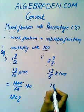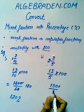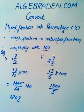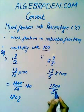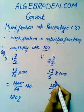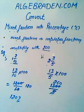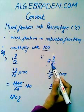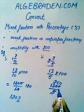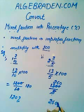It gives us 1300 over 5. Now divide the numerator with the denominator. It gives us 260. So when 2 and 3/5, a mixed fraction, is converted into percentage, it gives us 260%.